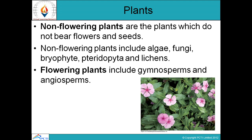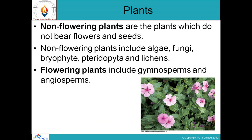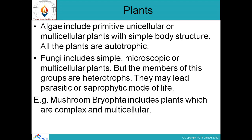Non-flowering plants are those which do not bear flowers and seeds. Examples include algae, fungi, bryophytes, pteridophytes, and lichens. Flowering plants include gymnosperms and angiosperms. Algae are autotrophic plants with a simple body structure — they may be primitive unicellular or multicellular plants with a single cell body or multicellular body.